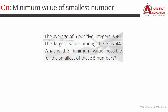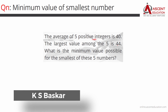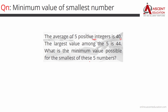It's a very good question. The average of 5 positive integers — these numbers are 5 positive integers. The average is 40. The largest value among the 5 is 44. What is the minimum value possible for the smallest of these 5 numbers?